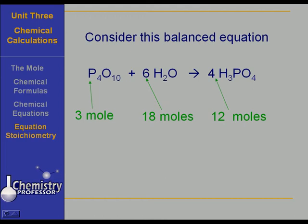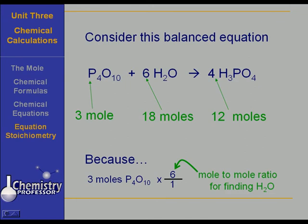Let's see how to set that up on a mole to mole ratio. Three moles of P4O10 times a six to one mole ratio. The six to one mole ratio is the mole ratio of water to P4O10. This will take us then to the number of moles of water that we need to react with the three moles of P4O10. That mole to mole ratio for finding water is the key to solving this problem.